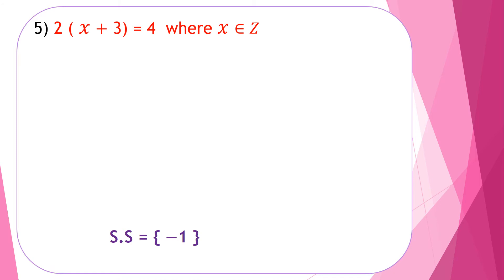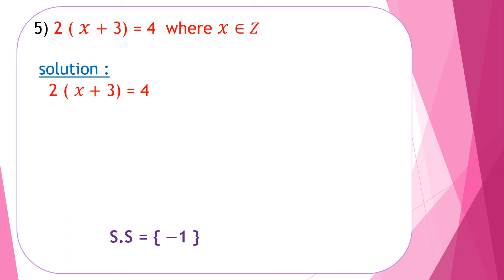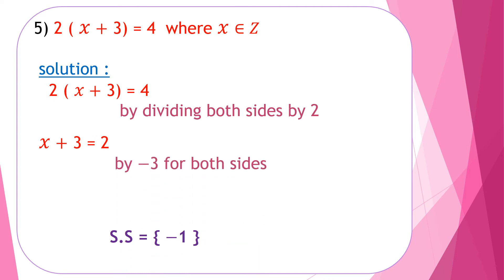Another example: 2 times (x plus 3) equals 4, where x belongs to the integers. First, divide both sides by 2 to get x plus 3 equals 2. Then add negative 3 to both sides to get x equals 2 minus 3, which equals negative 1. The solution set is {negative 1} because negative 1 belongs to the integers.